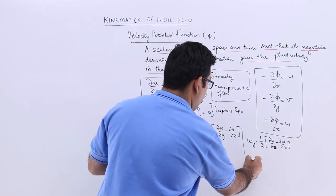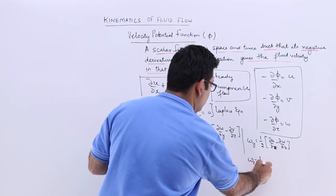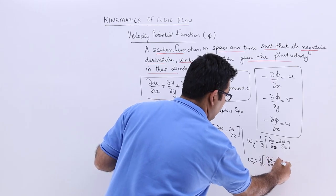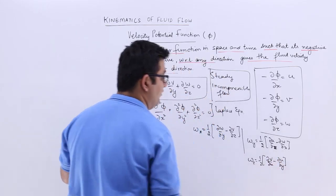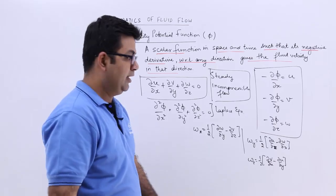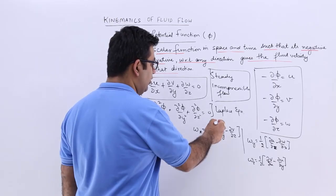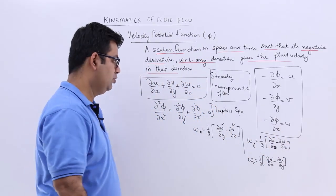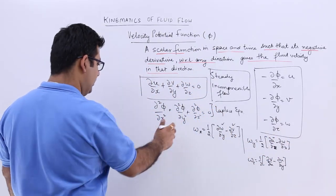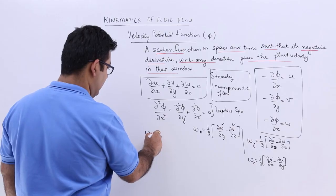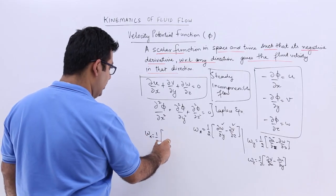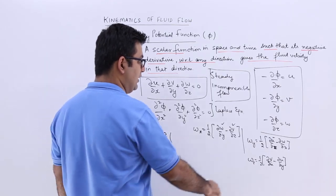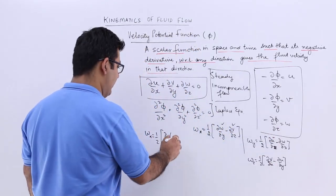Similarly, omega z equals one-half into partial v over partial x minus partial u over partial y. Now let's substitute the values of w, v, and u into these equations. Omega x becomes one-half times: partial over partial y of (minus partial phi over partial z), minus partial over partial z of (minus partial phi over partial y). This clearly equals zero.